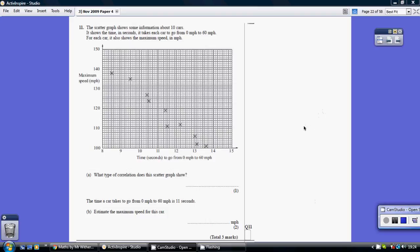Question 11. What type of correlation does this scattergraph show? Well, if it's a downward trend, we call it a negative correlation.